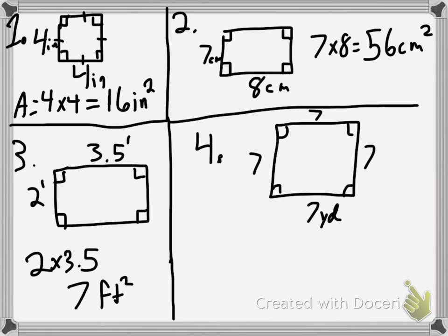And then we have a square that is 7 by 7, so 7 times 7 is 49 yards squared.